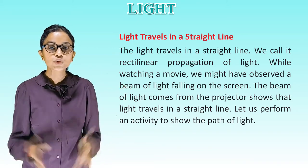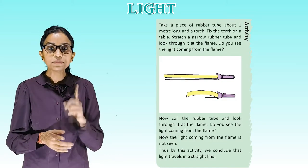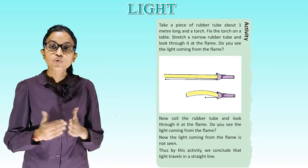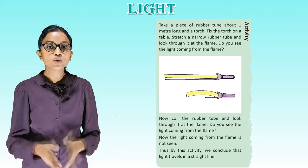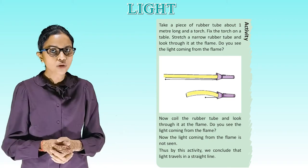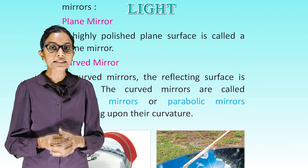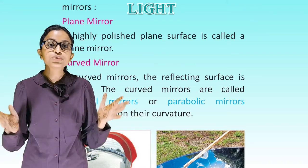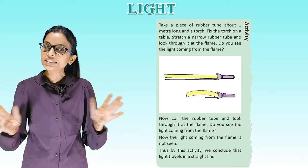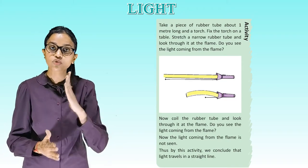Let us perform an activity to show the path of light. Take a piece of rubber tube about one meter long and a torch. Fix the torch on a table. Stretch the narrow rubber tube and look through it at the flame — do you see the light? Now coil the rubber tube and look through it at the flame. The light from the flame is not seen. Thus by this activity we conclude that light travels in a straight line.